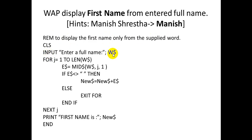CLS: INPUT the full name into variable w$. For j equals 1 to LEN(w$), use e$ equals MID$(w$, j, 1) to extract one character at a time from the given name. We then compare that character — if the first character is not equal to space, we should add it.